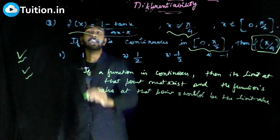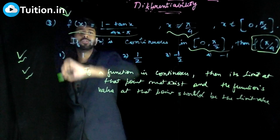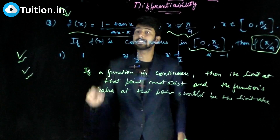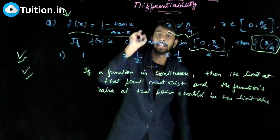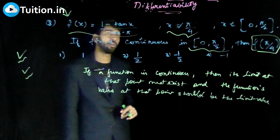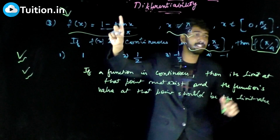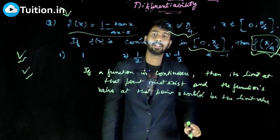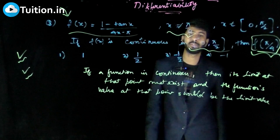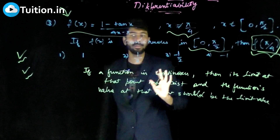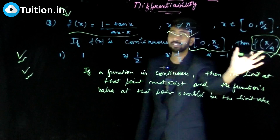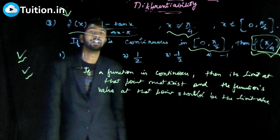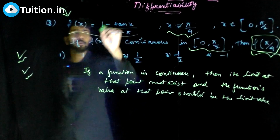If I can prove that the limit exists at π/4 and explicitly define f(π/4) to be that limit value, then I can say it is continuous at π/4. Everywhere else in the interval it is already continuous — the only issue is at π/4, because the denominator becomes 0 there.